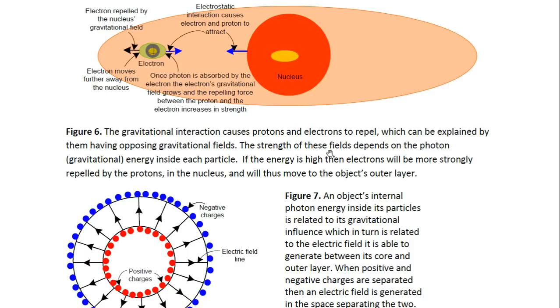Now here in this diagram, what is represented is the reason why electrons move from the core of a star to the outer layer. And all this is because protons and electrons repel each other, which can be explained by the fact that they have opposing gravitational fields. It is the gravitational interaction that causes, therefore, the electron to move away from the protons.